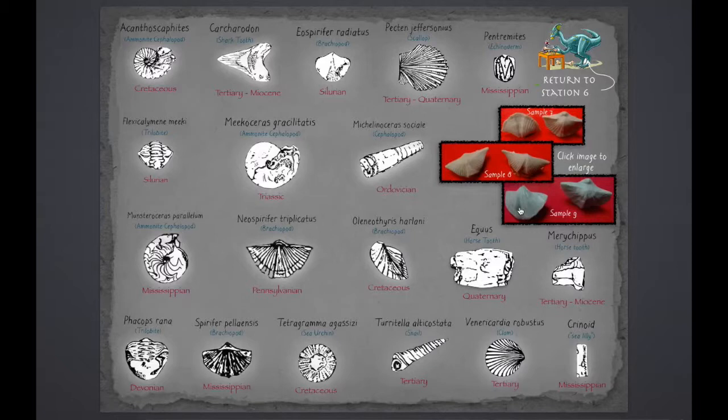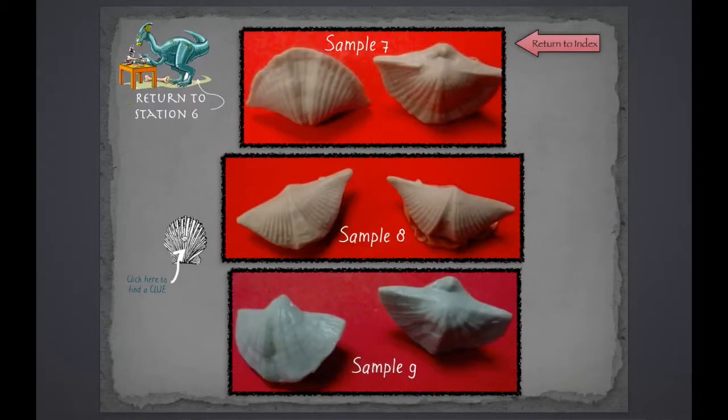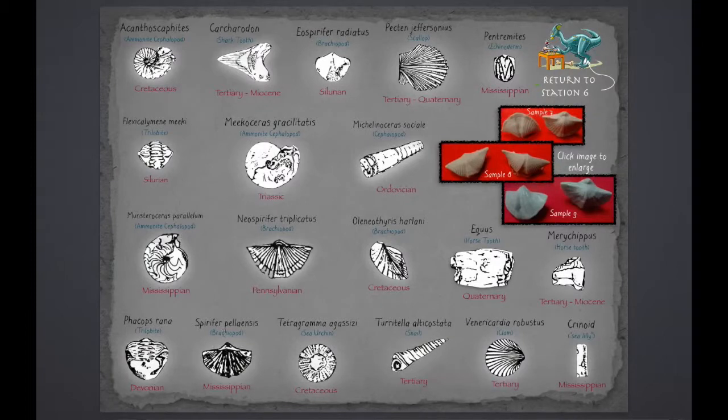But it's important for scientists to get it right, even though it might look like this one, Neospirifer, or this one down here, or maybe even Eospirifer radiatus. As I study from an enlarged image, I soon realize that I actually have one of each.